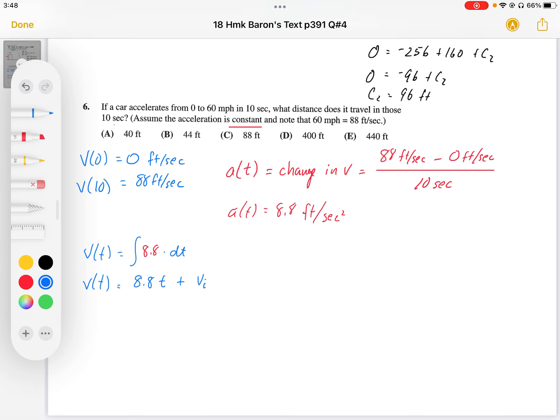And so I'm just going to plug in my plus c. V of 0 equals 0, so I get my v initial equals 0. So my v of t function is going to be 8.8 t plus 0. So that's my v of t.